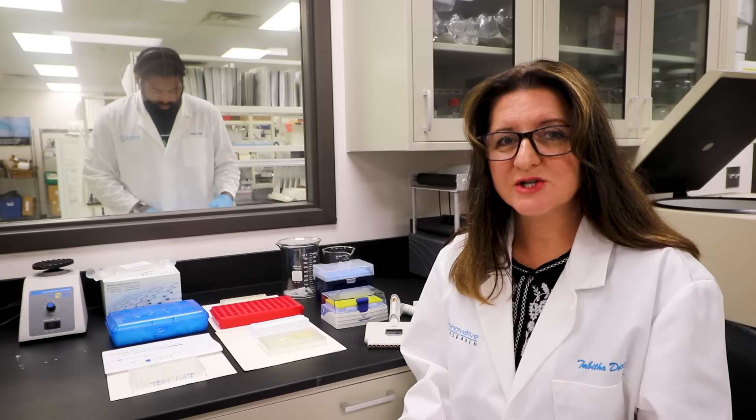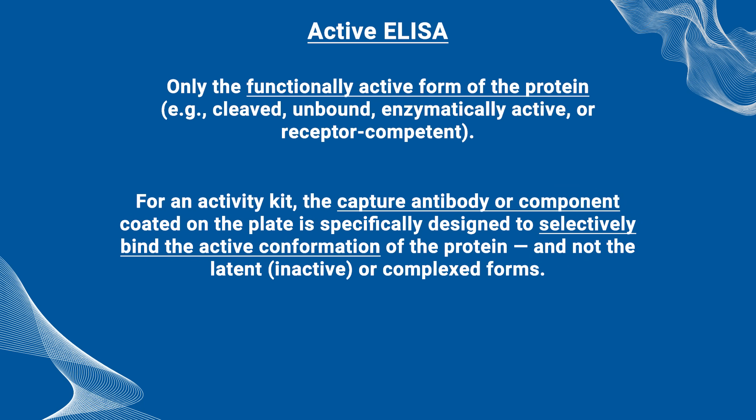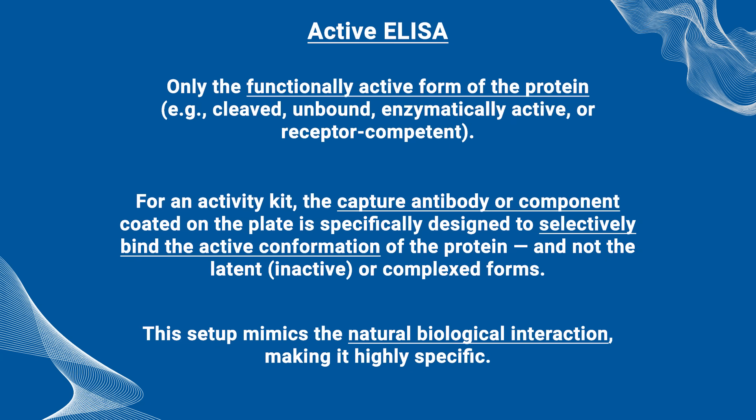Choosing between an active and a total ELISA kit depends on the biological questions you're trying to answer in your results. Here are some key distinctions. An active ELISA kit measures only the functionally active form of the protein, such as cleaved, unbound, enzymatically active, or receptor competent. The capture antibody coated on the plate is specifically designed to selectively bind the active conformation of the protein and not the latent, inactive, or complexed forms. This setup mimics the natural biological interaction, making it highly specific.